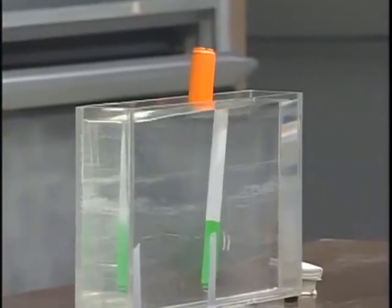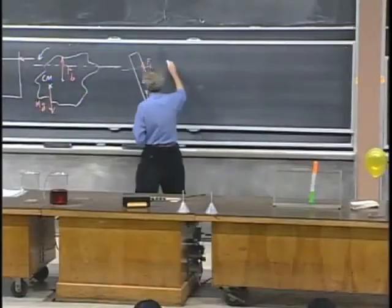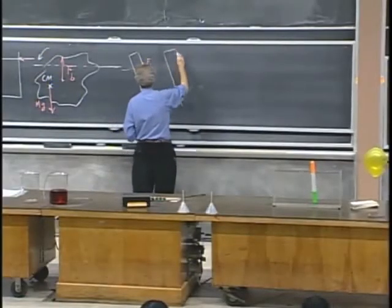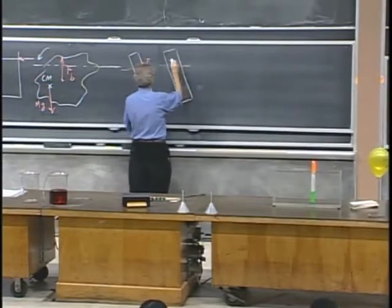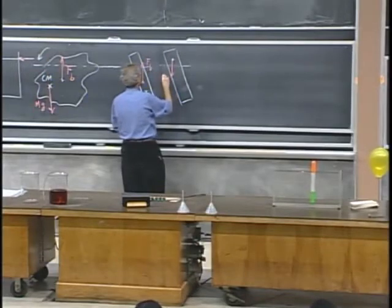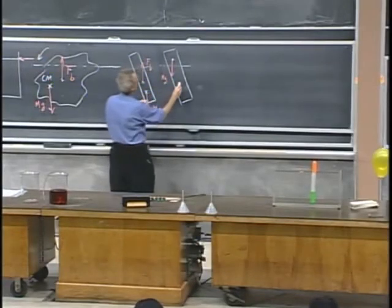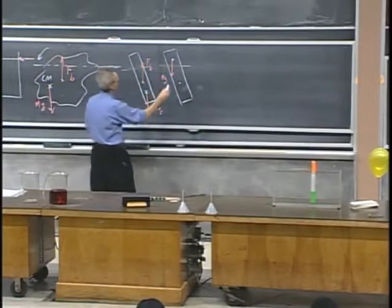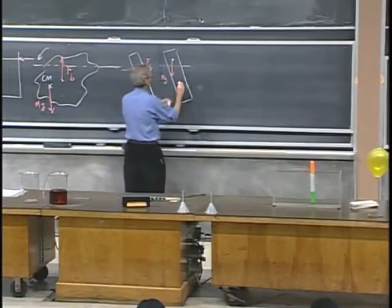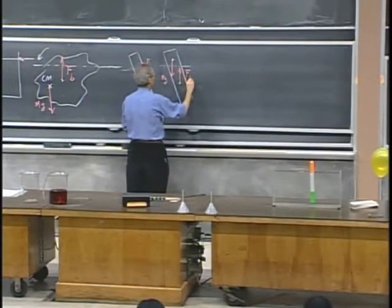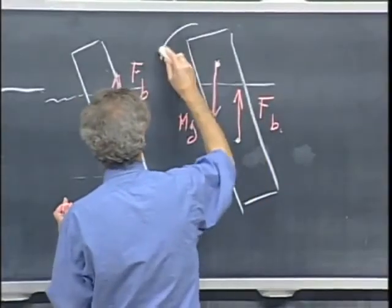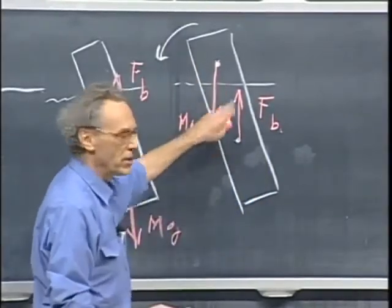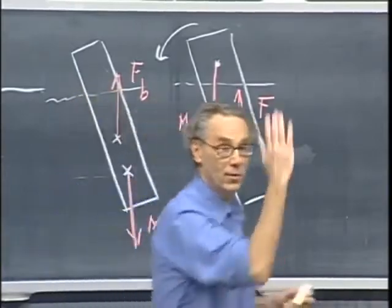If I would turn it over, then it's not stable, because now I would have the center of mass somewhere here high up. So now I have mg. And the center of the buoyant force, the displaced water, is about here. So now I have the buoyant force up, and now you see what's going to happen. I tilt it to the side, and it will rotate even further. This torque will drive it away from the vertical.